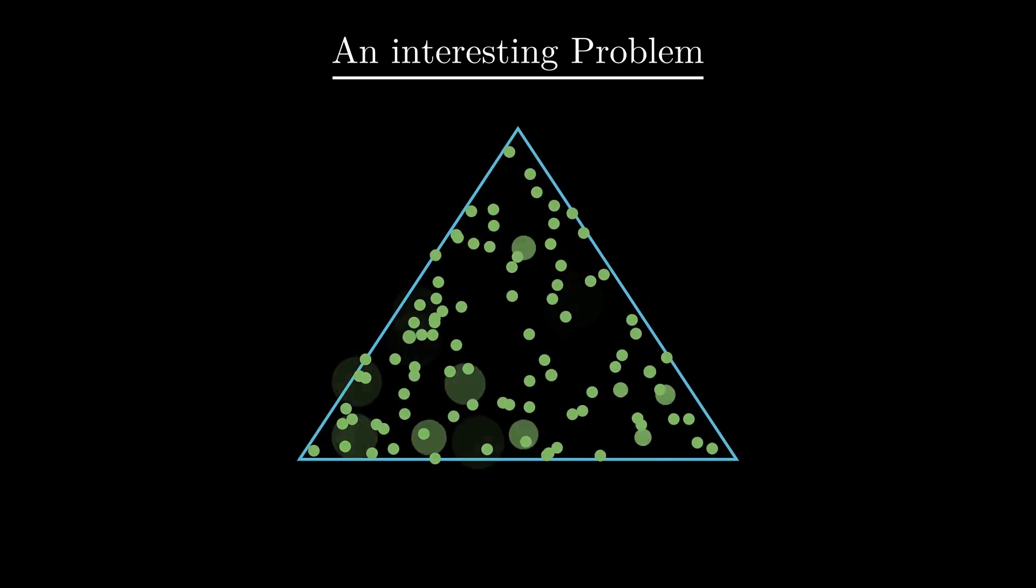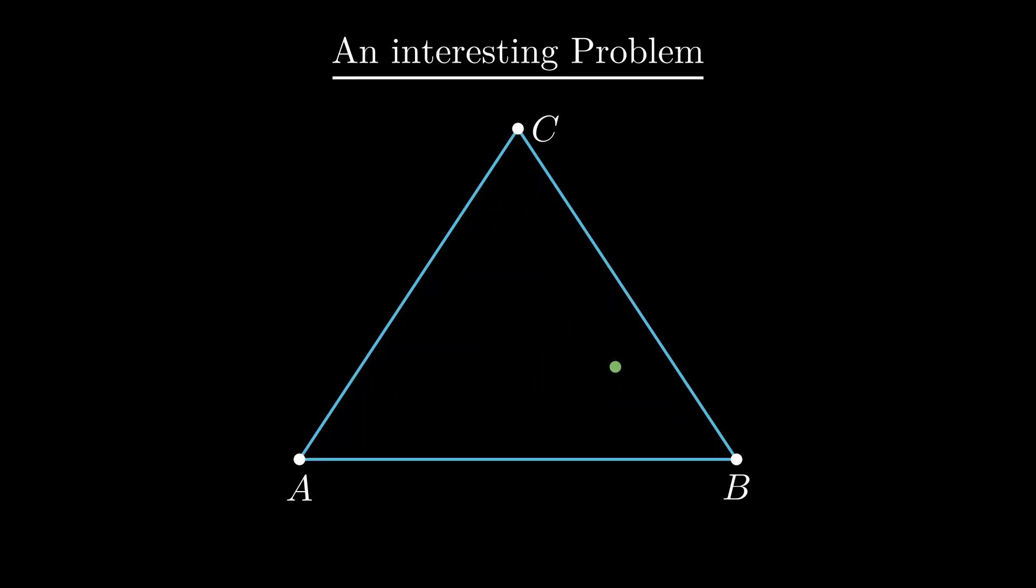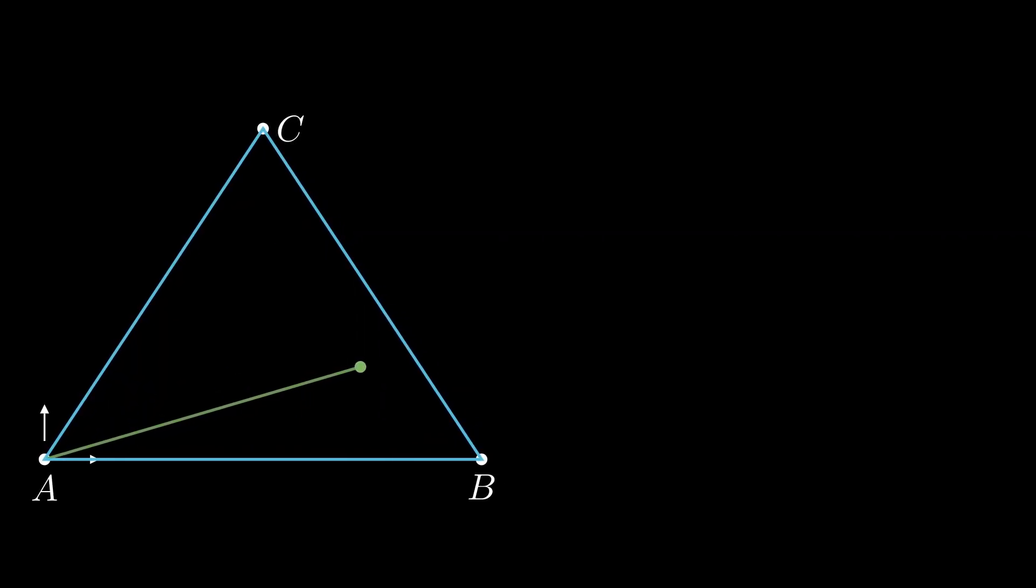We now get to the problem that motivated me to make this video. Consider a point uniformly chosen inside a triangle. What is the expected distance of this point from vertex A? This is not a conceptually hard problem. If we fix the triangle in a coordinate system and let L denote the distance we are interested in, it's easy to see that the expected length is equal to the double integral of square root of x² plus y² over all the points on the triangle.